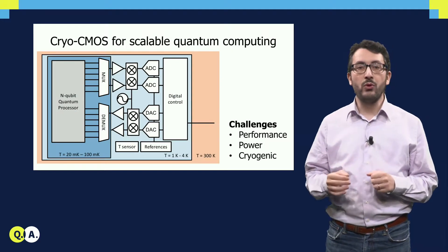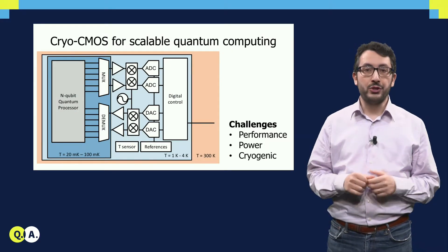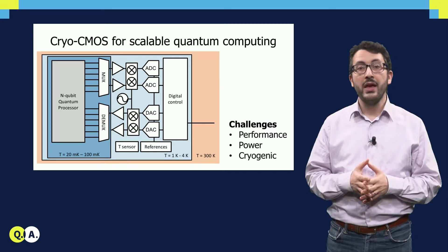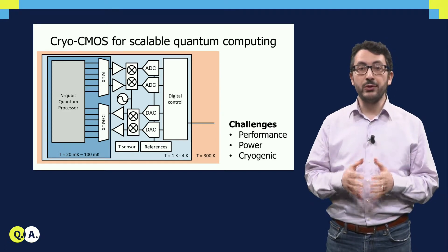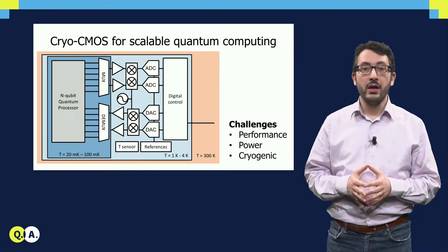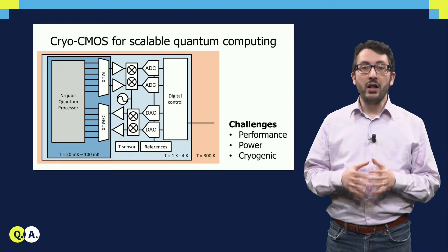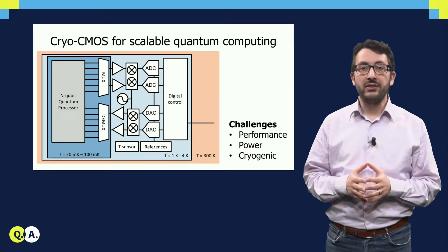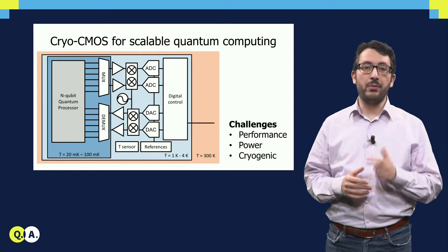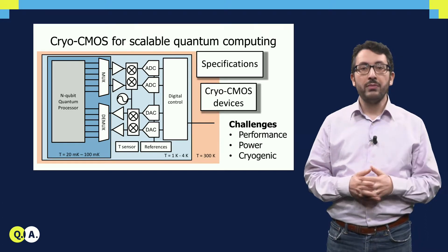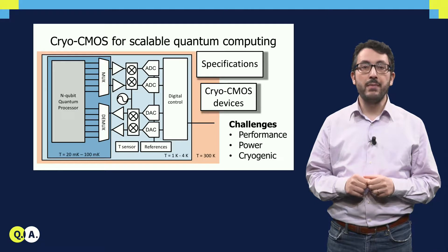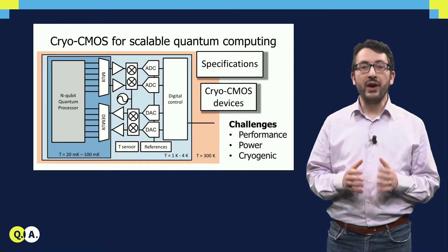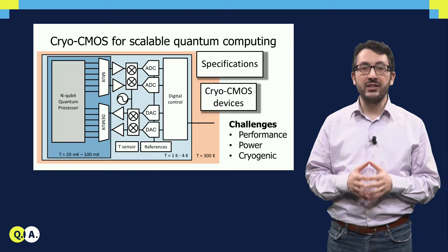So if you want to build a scalable quantum computer, the best approach, and that is what researchers are doing today, also here at Qtech, is to research cryogenic CMOS technology, or cryo-CMOS in short. So we want to build all this system here using cryo-CMOS. But before we can do that, we have to look at two specific problems. First of all, which are the exact specifications that this system must satisfy? And second, how exactly do cryo-CMOS devices operate at such low temperatures?